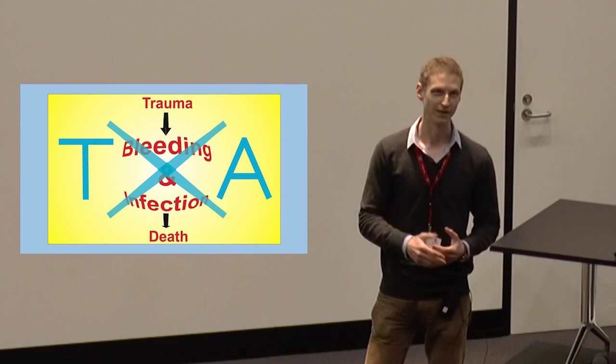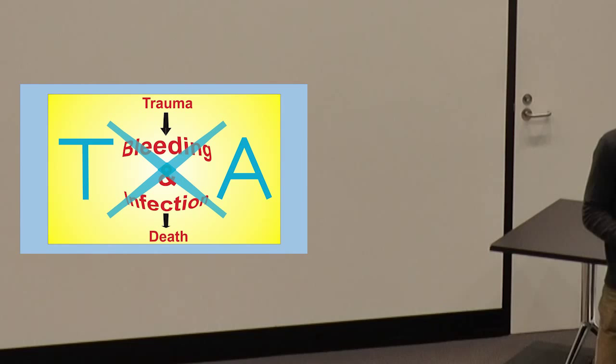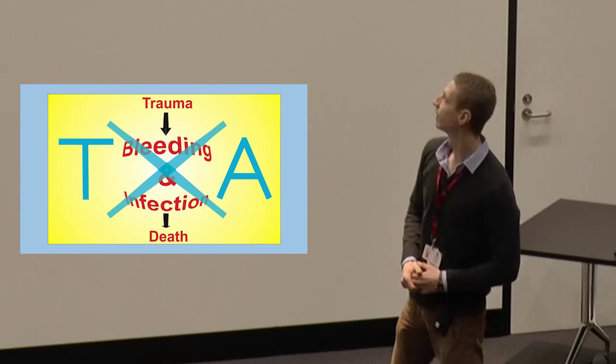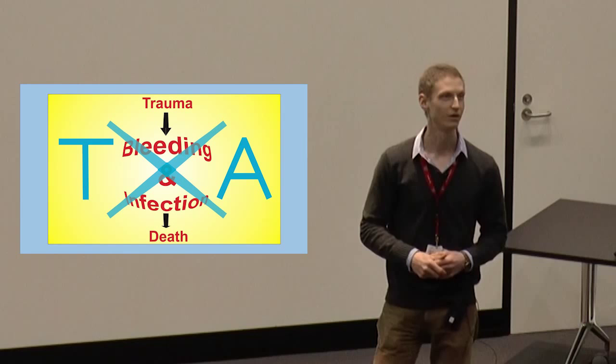Plasmin is not only involved in bleeding, but can also interact with cells of the immune system. This is important for trauma patients who are at risk of both bleeding and infection, as those patients are often in a state which we call hyperplasminemia, so increased levels of plasmin in the blood.